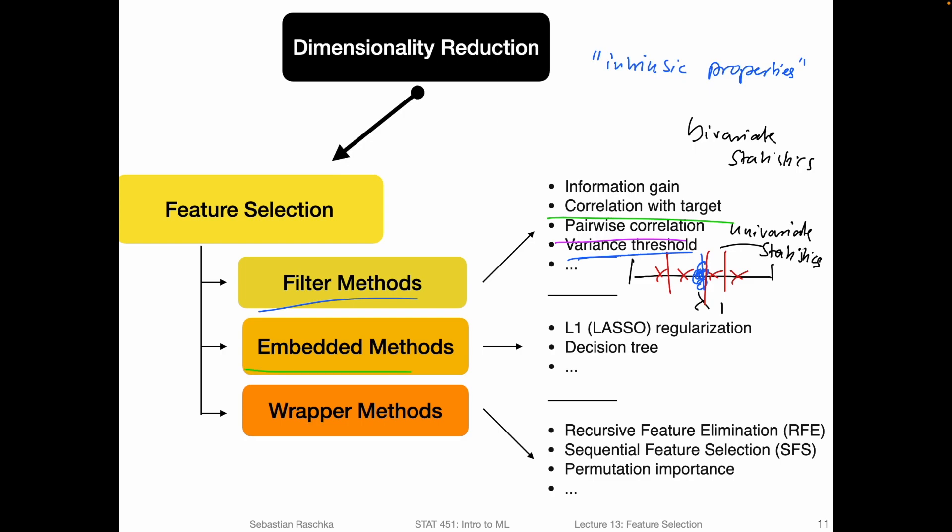Embedded methods actually involve a model. Like the name embedded implies, these feature selection methods are embedded in the algorithm, in the learning algorithm. They are usually part of optimizing the objective function. We will cover this in way more detail in the upcoming videos, but just to give you one example.